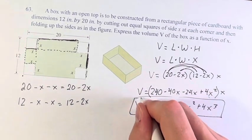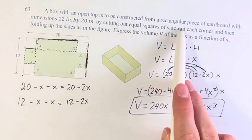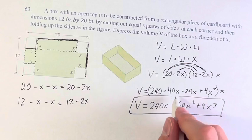This is the volume of a box cut out from 12 by 20 cardboard, cutting out equal squares of side x at the corner. This is your volume.